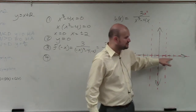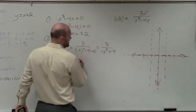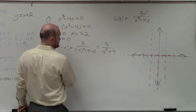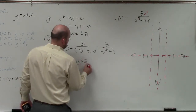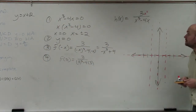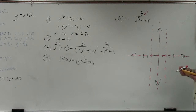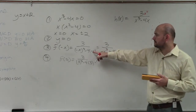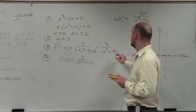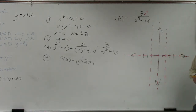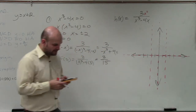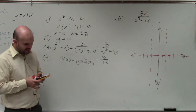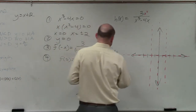I'll evaluate two points to the right. Let's evaluate f of 3. That gives us 3 over 27 minus 12, which is 15. So 3 over 15 is approximately one fifth, which we can rewrite as 0.2. When graphing I like writing values as decimals.